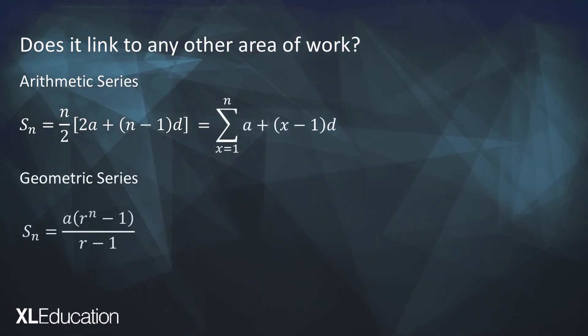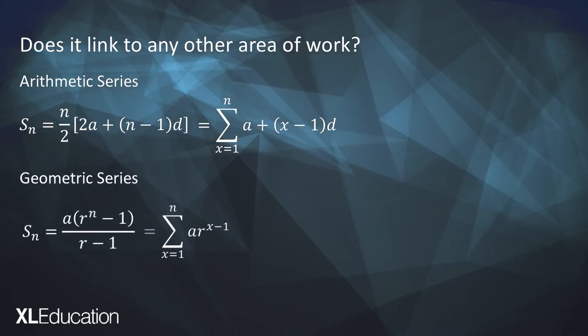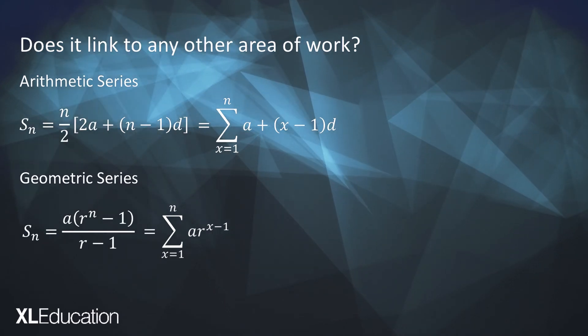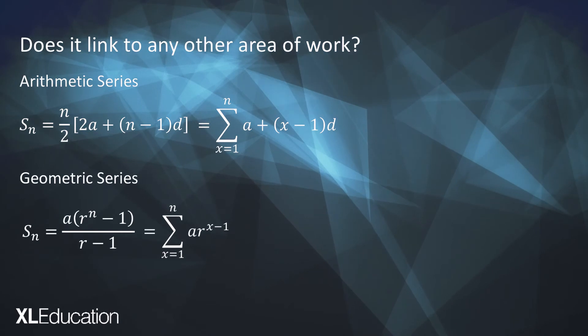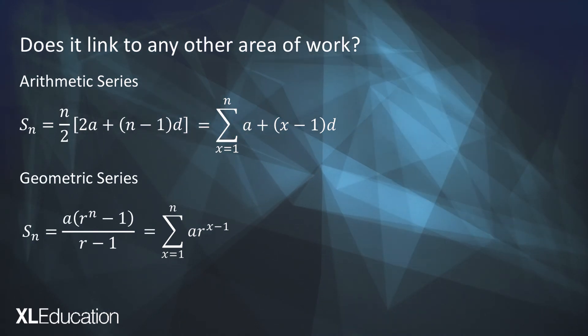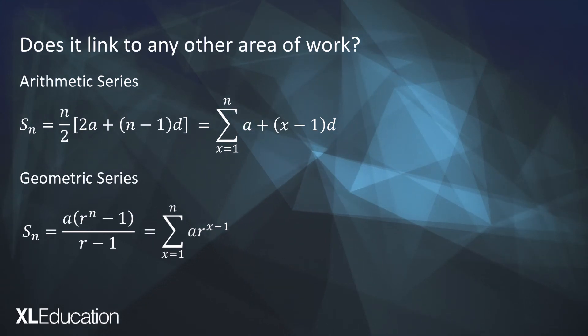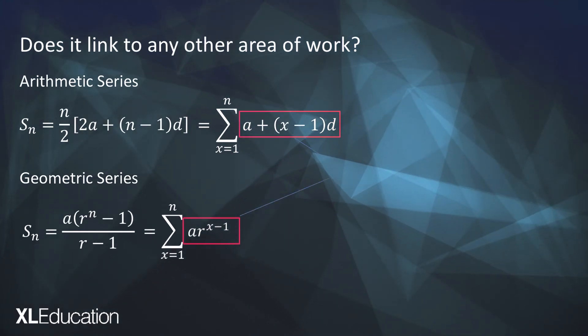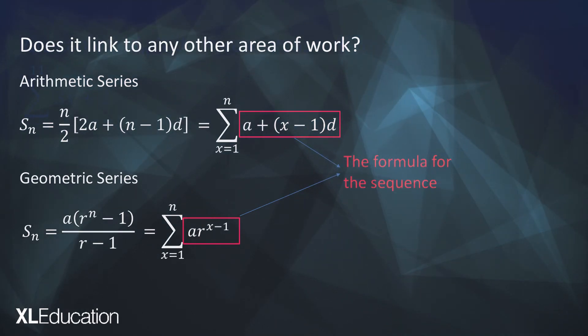For geometric series you know that you can find the sum of the first n terms using that formula over there and in the same way we can link it to sigma notation where you can write it as the sigma from x equals 1 to n of ar to the x minus 1. ar to the x minus 1 is the formula that we use in order to find each term in a geometric sequence. So note again that the function that goes next to that sigma is the formula that you use in order to generate each term of the sequence.